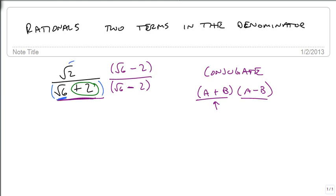When we do that, we just multiply across on top, so we get √2 times √6, which is √12, minus 2√2. And on bottom, we get the difference of squares, so we're going to get (√6)² - 2².